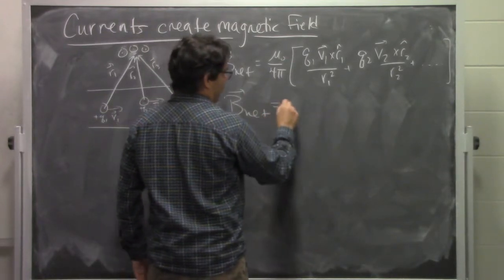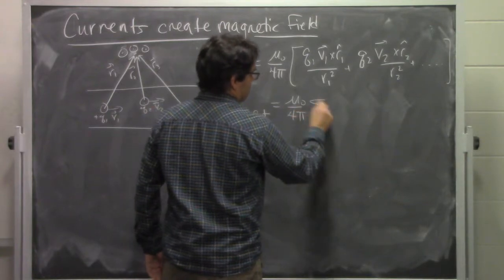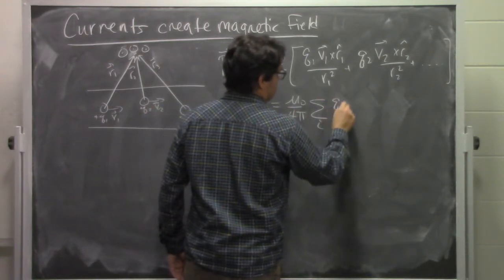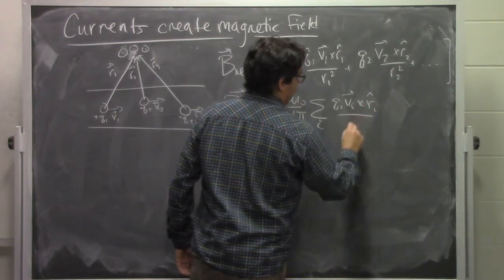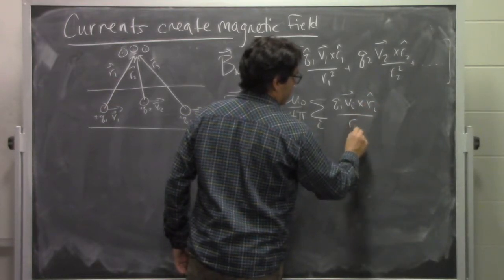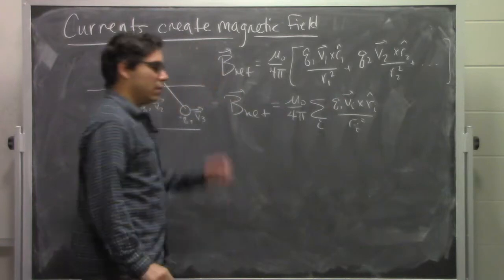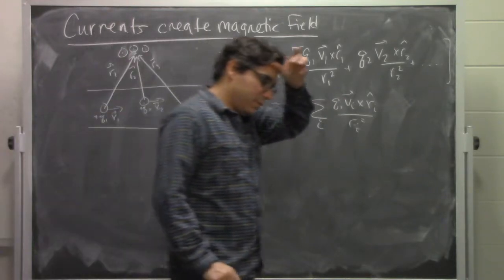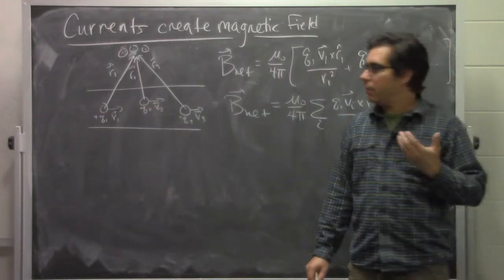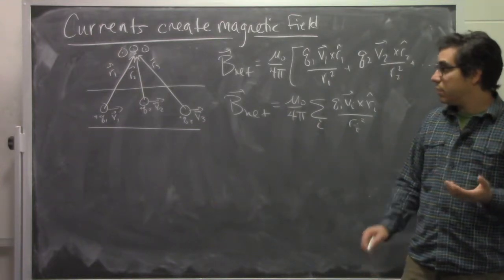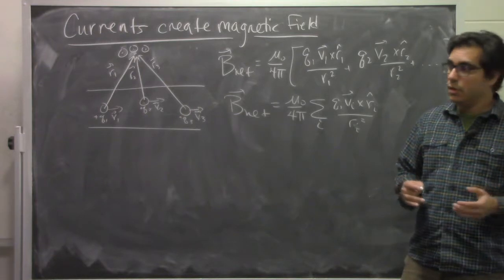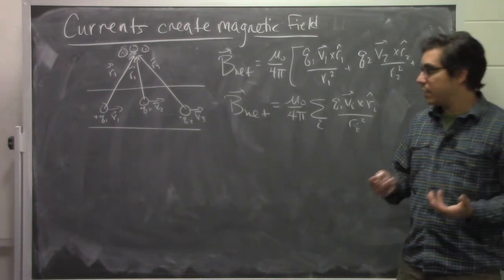To get the total magnetic field is equal to mu naught over 4 pi times the sum of all the individual contributions by the individual charges that are running along that wire. The power comes in when we use this to build a model for the wire where you have a steady current running through it.